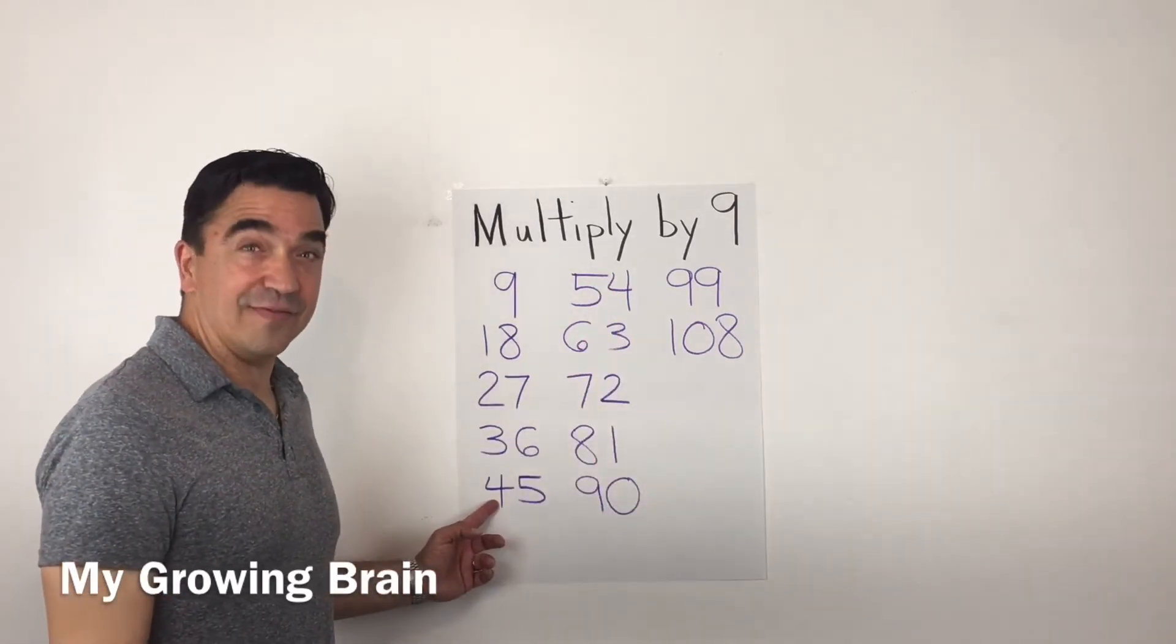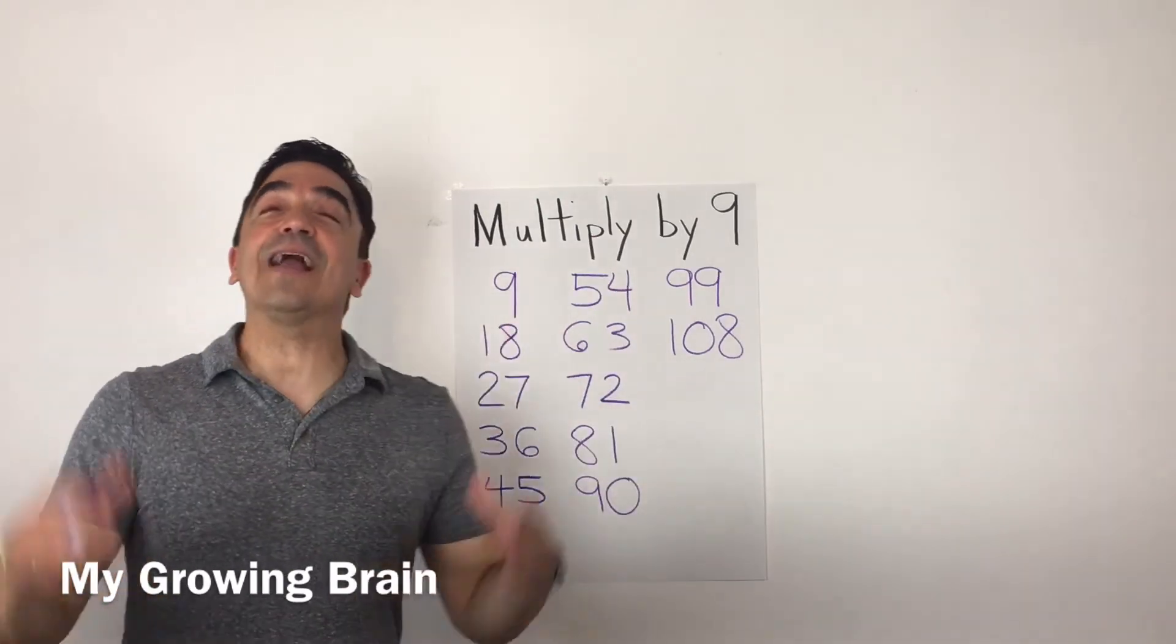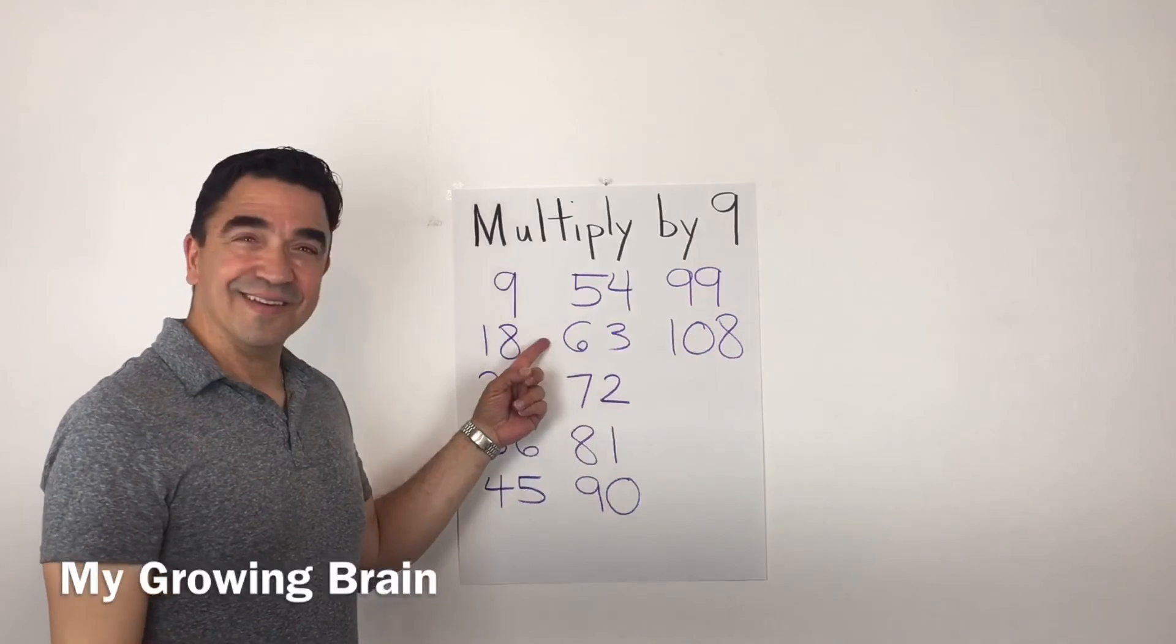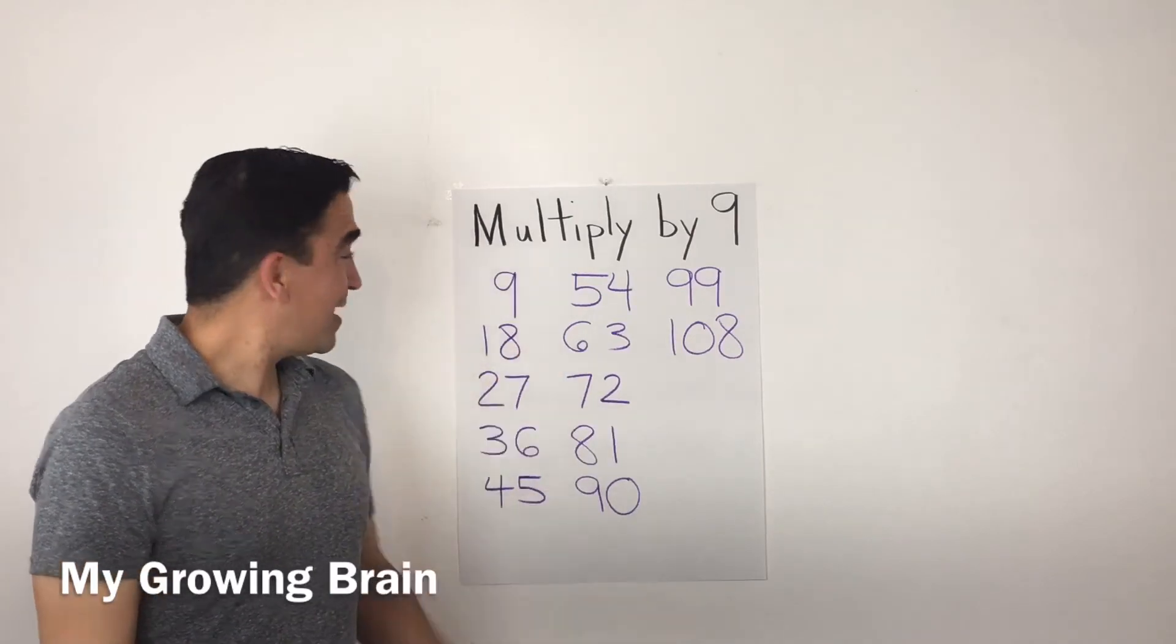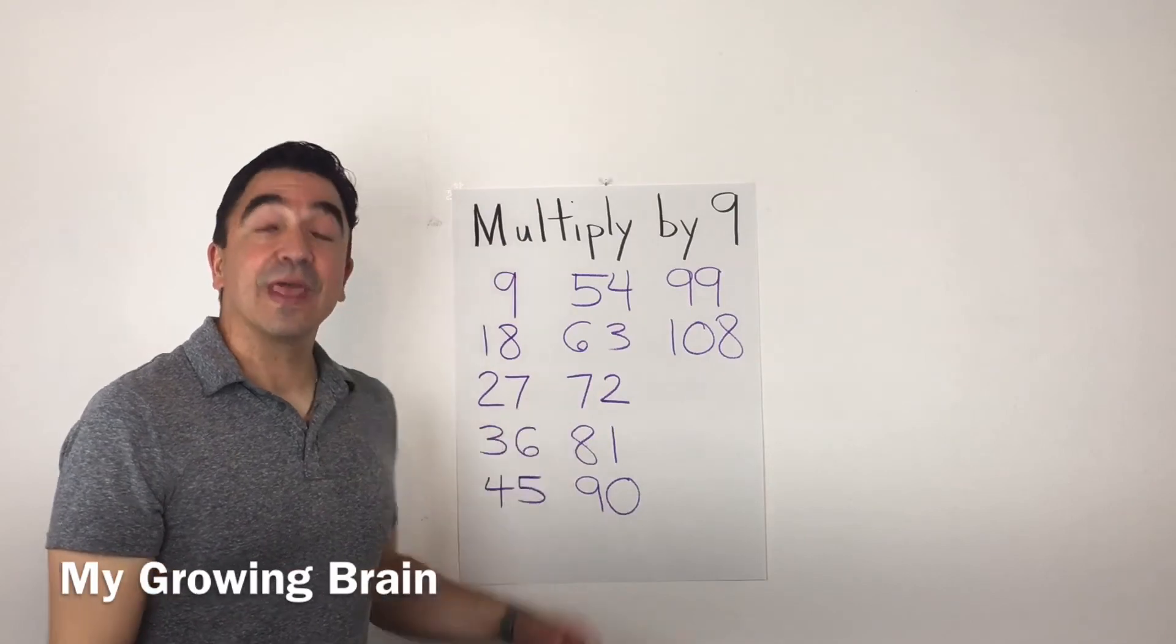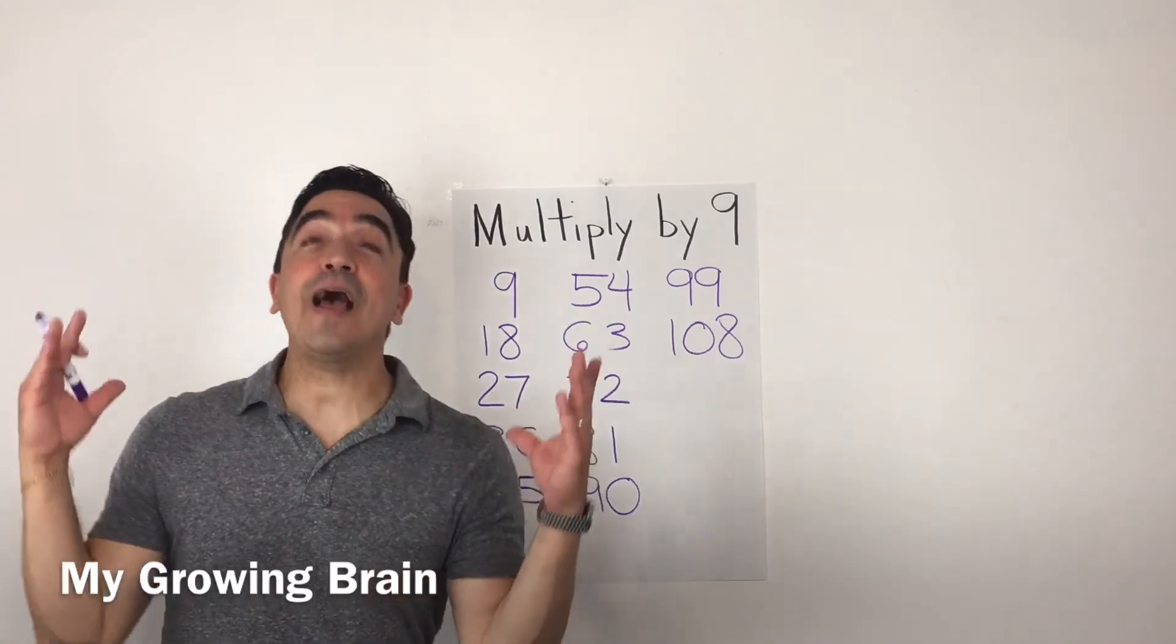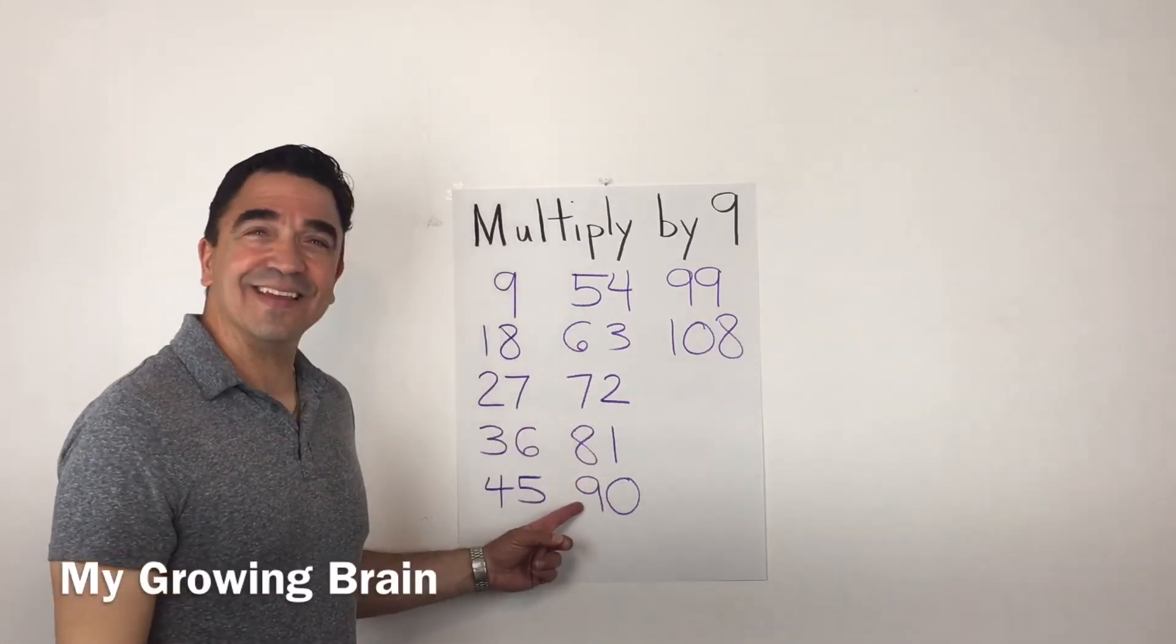Nine times six, fifty-four. Nine times seven, sixty-three. Nine times eight, seventy-two. Nine times nine, eighty-one. Nine times ten, ninety.